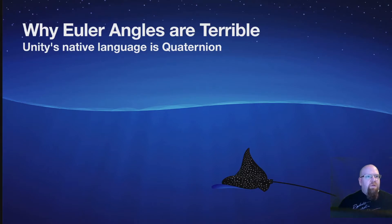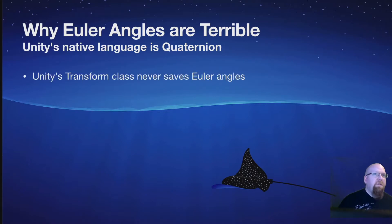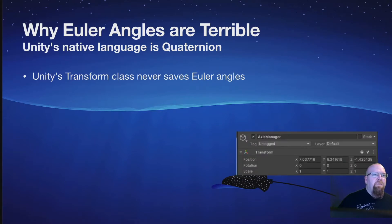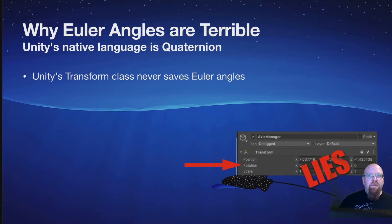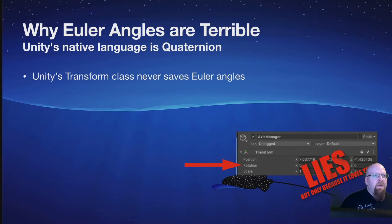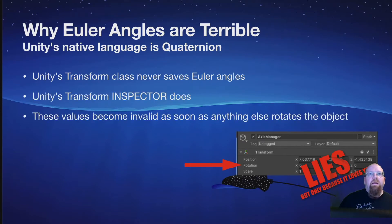The transform class never saves Euler angles. I know what you're thinking — you're thinking yes it does, because you've seen it. It's right there in the rotation. You type numbers in and they stay there. Well, I hate to be the bearer of bad news, but these are lies. The inspector lies, but only because it loves you. The inspector saves the numbers that you type in, but this only exists in the inspector itself and doesn't exist anywhere on the transform object. They become invalid as soon as anything else rotates the object, and you can't get to it in code.